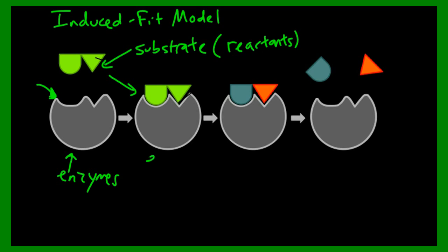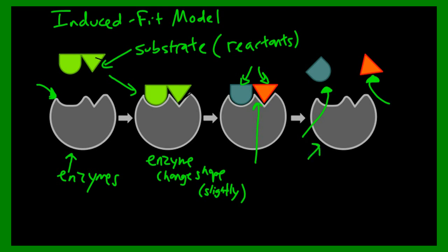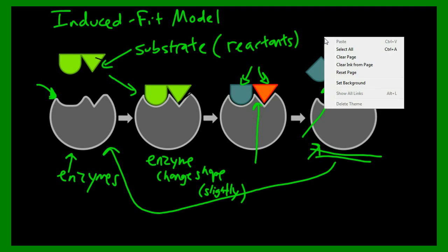When they fit, it changes the shape of the enzyme very slightly. When it changes shape slightly, notice what happened to our substrate. It's no longer green, but it's two different colors. It has separated the substrate into two different things and releases products. When it releases those products, notice what happens to the enzyme. This enzyme here is the same as that enzyme there because it goes back to its original shape.